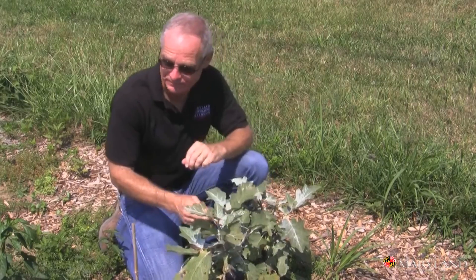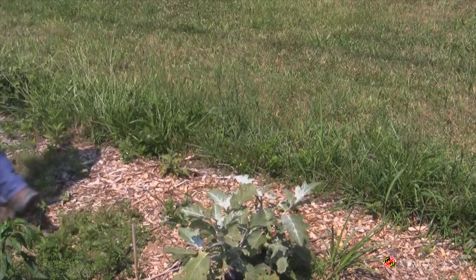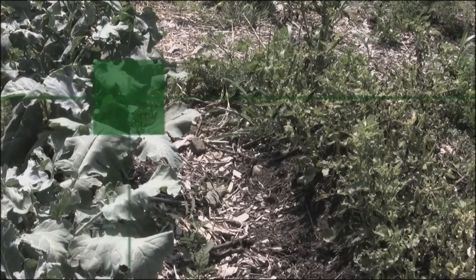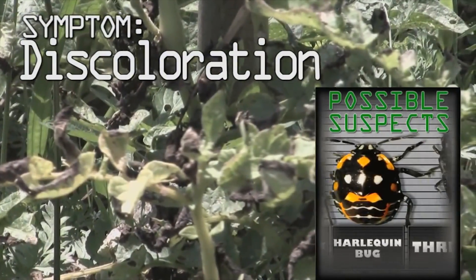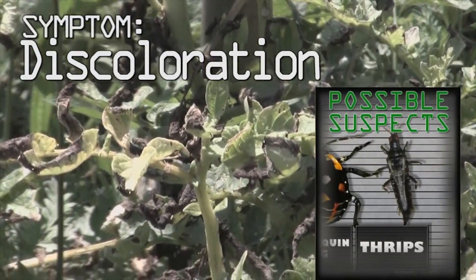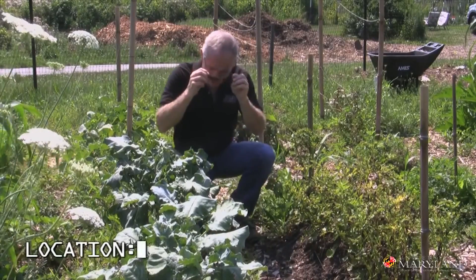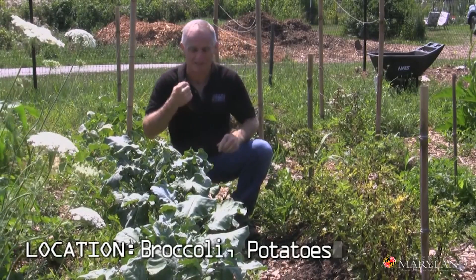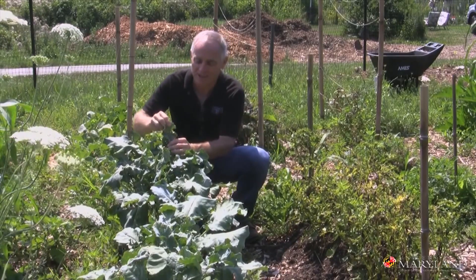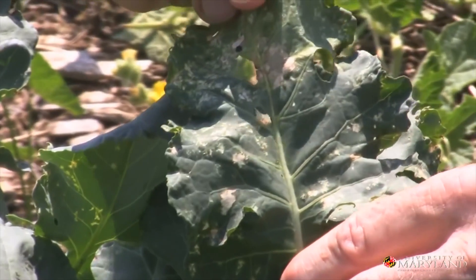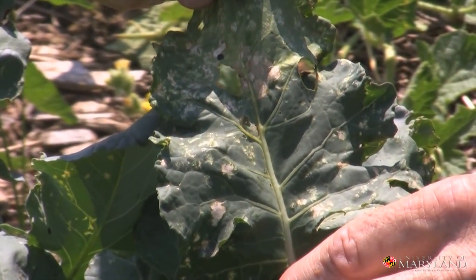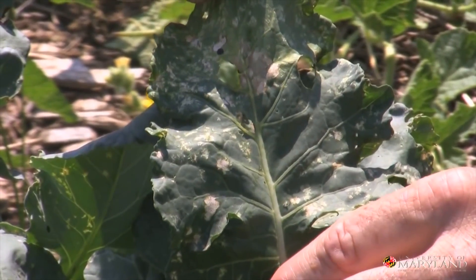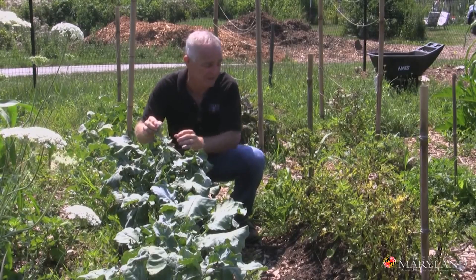This is clearly a case of double homicide — death by discoloration. You can see harlequin bugs have been feeding on this. They take their beaks, jam them into the plant, and secrete proteolytic enzymes that cause these lesions.